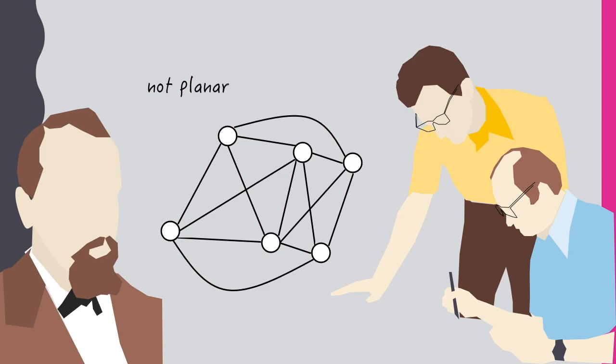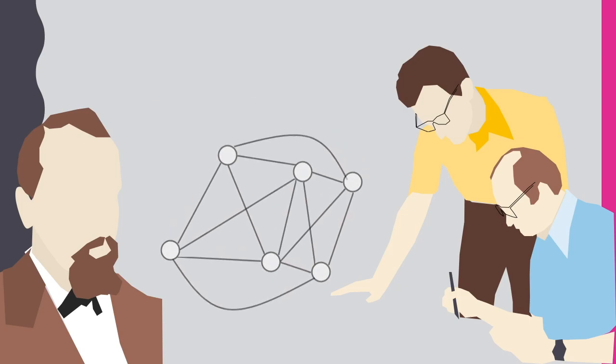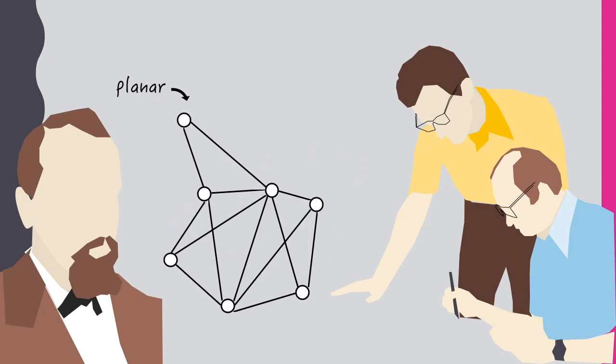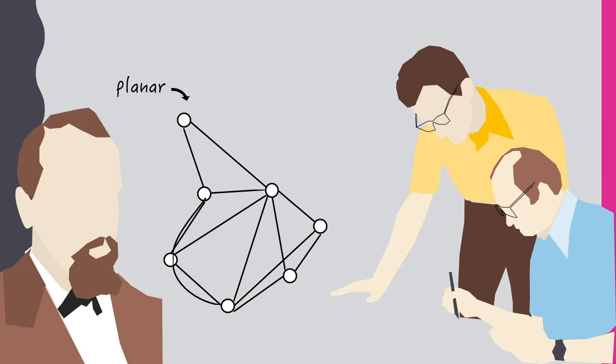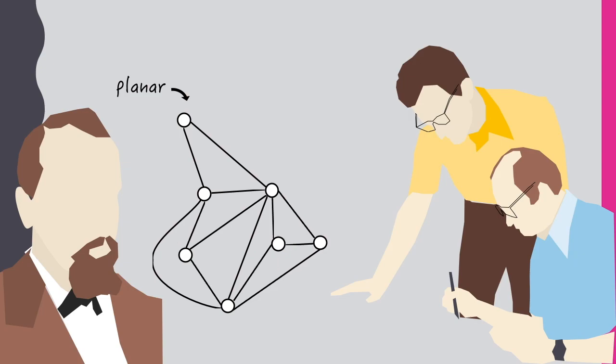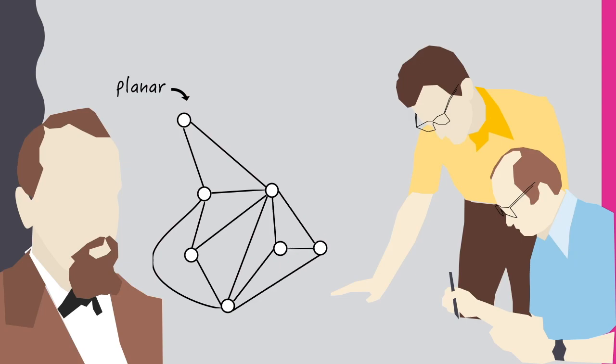This graph here is not planar because there's no way to move around the edges or vertices so that the lines don't cross. On the other hand, even though this graph has intersecting lines, we can use a continuous morphing of the graph — moving vertices and stretching edges — until the lines don't cross. We say that the original graph and the deformed one are isomorphic to each other because they contain exactly the same graph information in terms of vertices and connecting arcs between them.